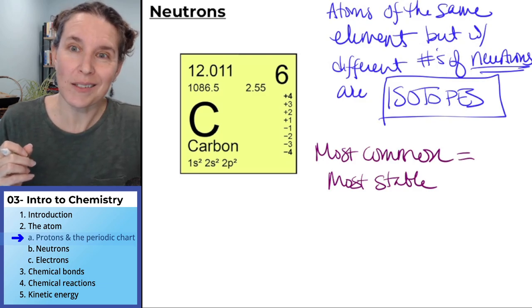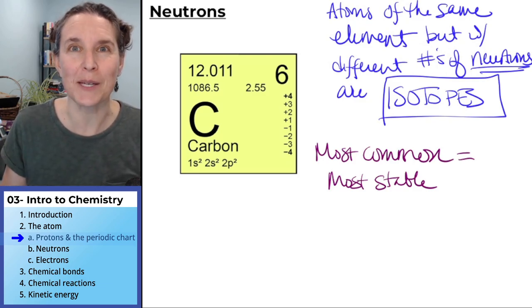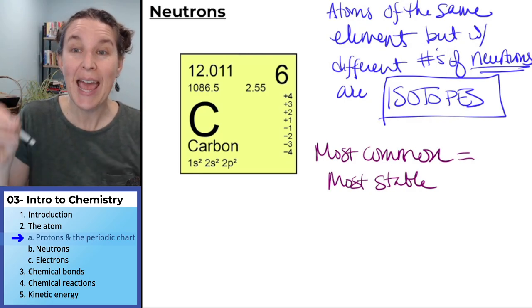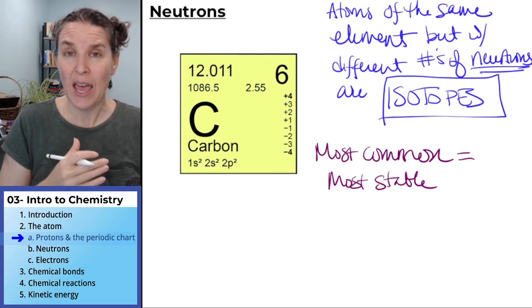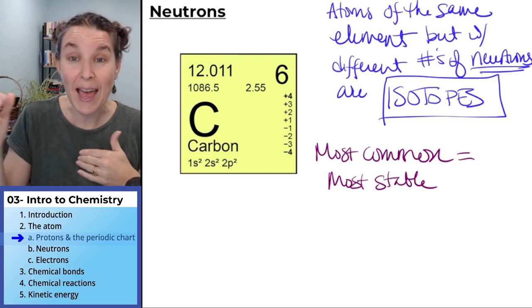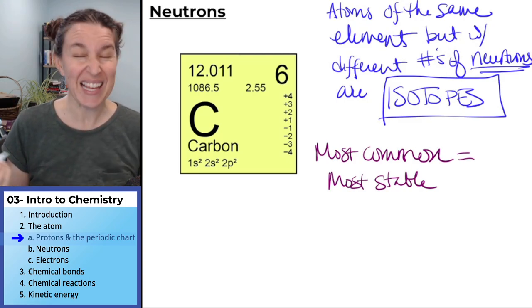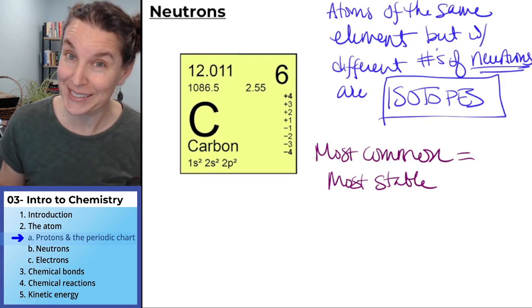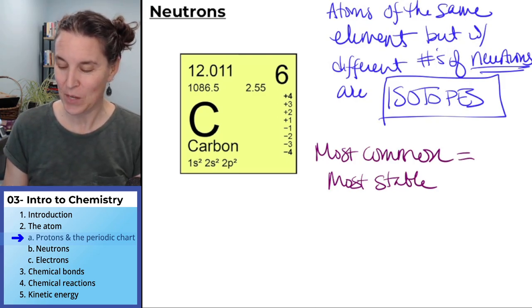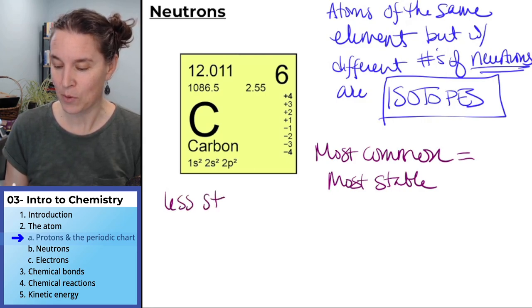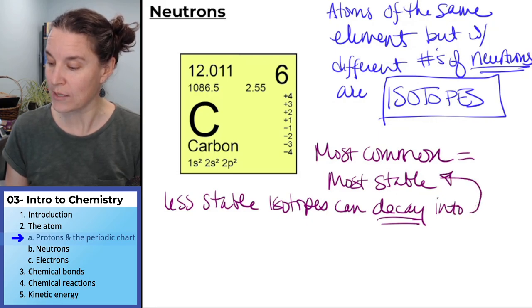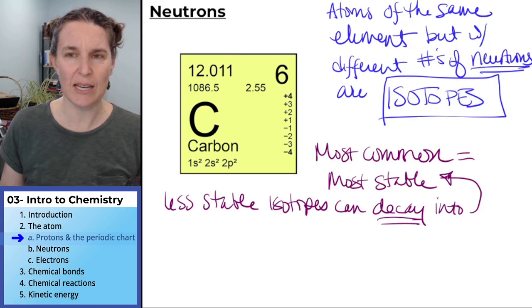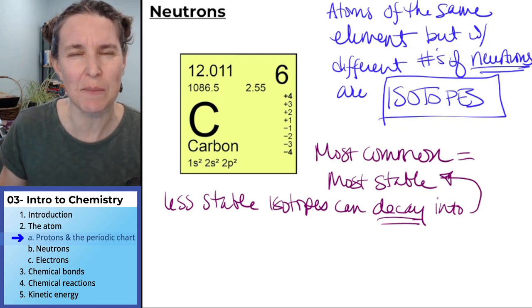Some isotopes are less stable. Those are less common because they're not as stable, right? That makes sense. And in fact, the less stable isotopes can actually decay and become the more stable isotope. And that happens over time. And sometimes there are radioactive particles that are released during this decay process. So less stable isotopes can decay into the more stable isotopes. That works, yes, that intuitively makes sense.